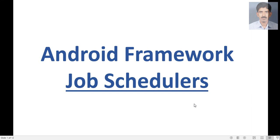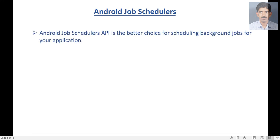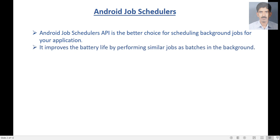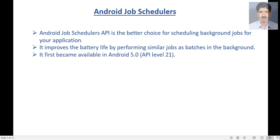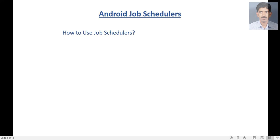Before going to create an Android example of Job Schedulers, you must have some theoretical concepts. I have created a simple presentation to cover the basics. The Android Job Schedulers API is the better choice for scheduling background jobs for your application. It improves battery life by performing similar jobs as batches in the background. It first became available in Android version 5.0, that means API level 21. It is the better alternative for AlarmManager and SyncAdapters.